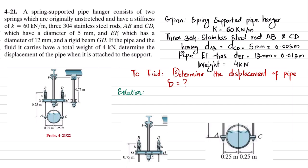Let's start with the solution. We know that displacement is equal to force times length divided by area times E (δ = FL/AE). What we will do is find the force in CD, in AB, and in EF. For that, I will cut this pipe and draw the free body diagram of the section shown here.